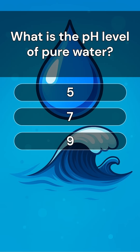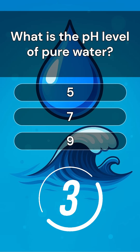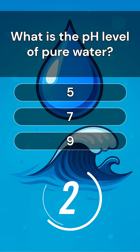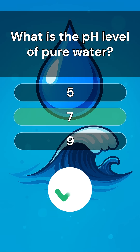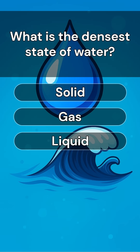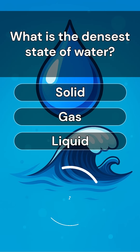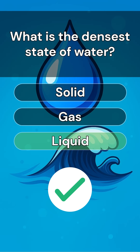What is the pH level of pure water? Answer is 7. What is the densest state of water? Answer is liquid.